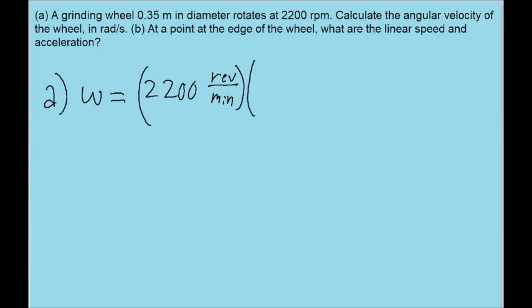First I'm going to convert from revolutions to radians by using the conversion factor that states that one revolution is equal to two pi radians, so these revolutions will cancel out and be replaced with radians.